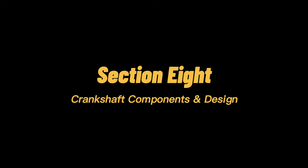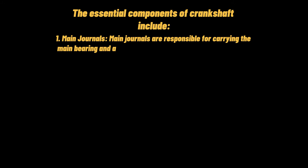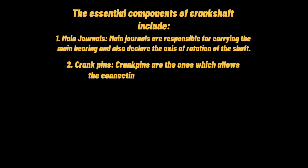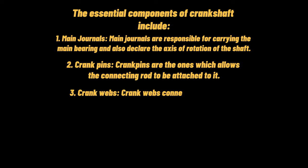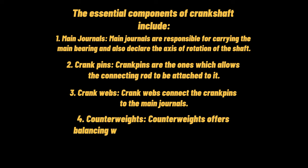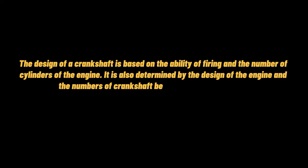Crankshaft Components and Design. The essential components of a crankshaft include: main journals, which carry the main bearing and define the axis of rotation of the shaft; crank pins, which allow the connecting rod to be attached; crank webs, which connect the crank pins to the main journals; and counterweights, which offer balancing and are mounted at the webs. The design of a crankshaft is based on its ability to fire and the number of cylinders, the engine design, the number of crankshaft bearings, and its stroke size.